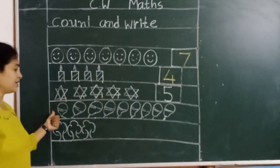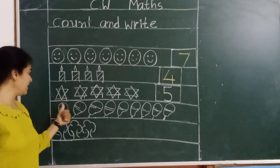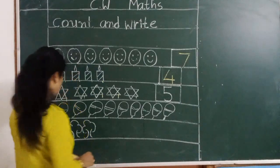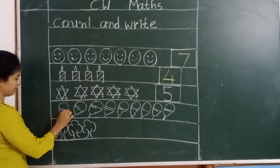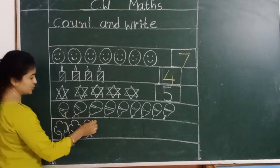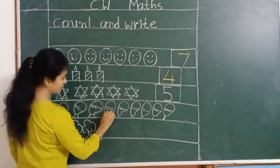Now next objects are balloons. Next object balloons. So let's recount. How many they are. 1, 2, 3, 4,